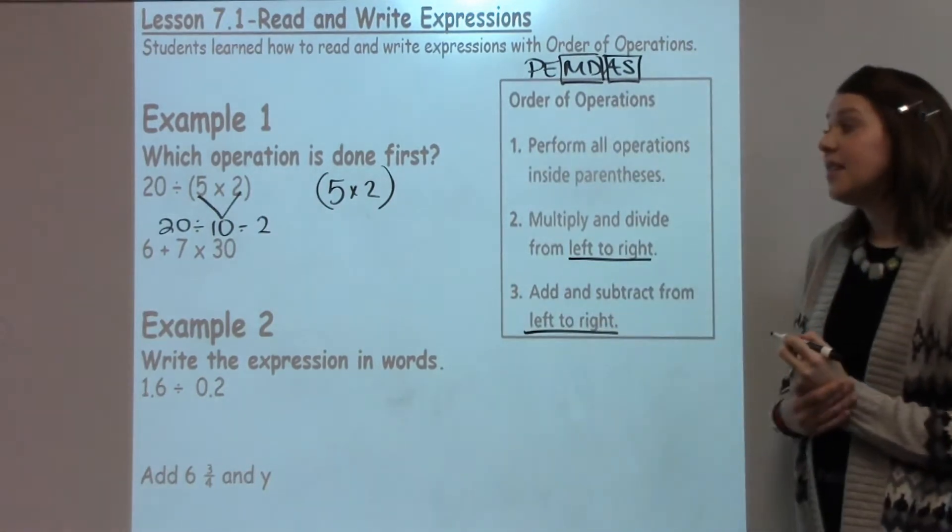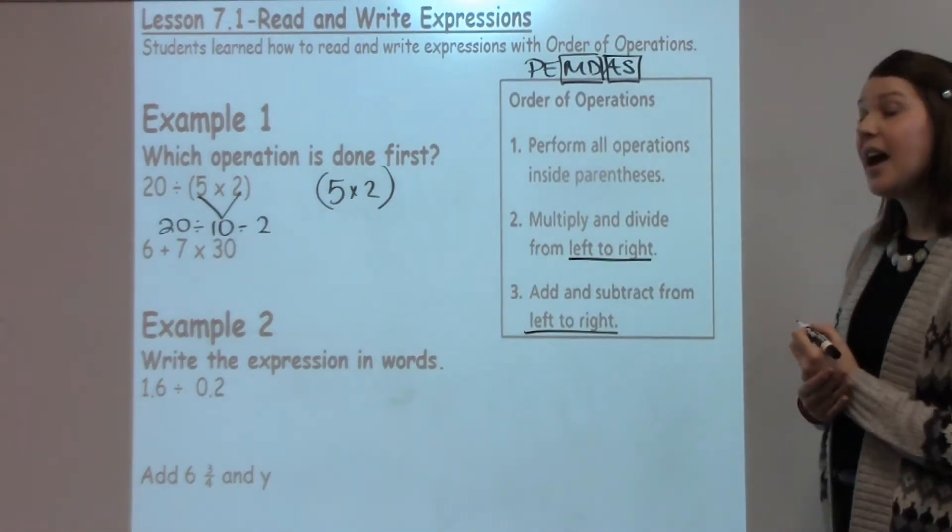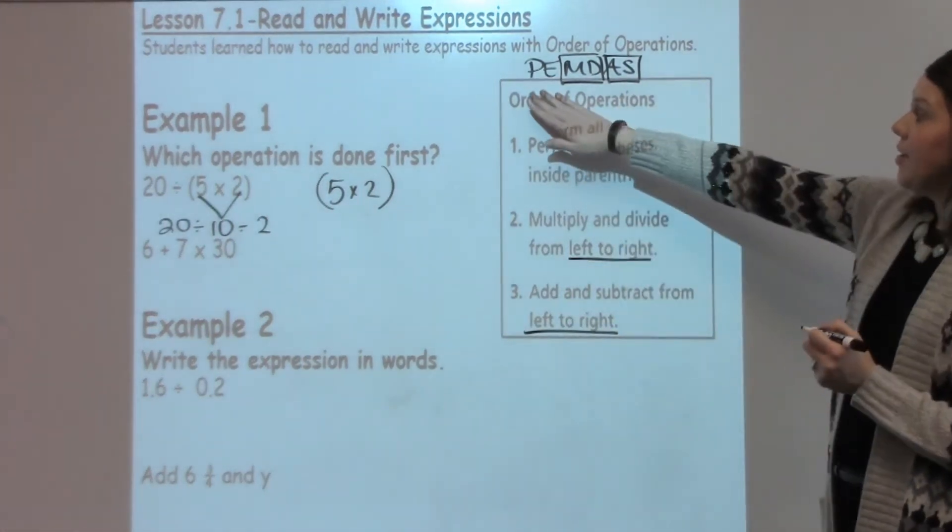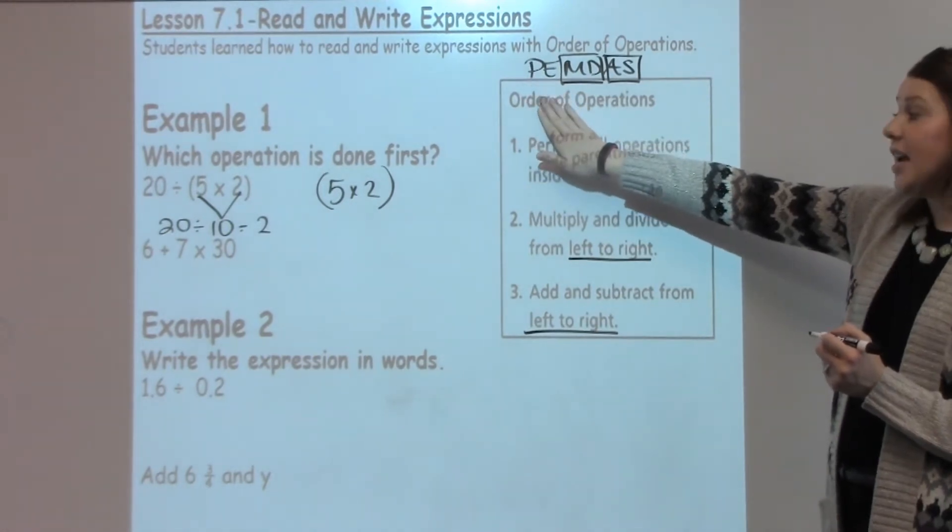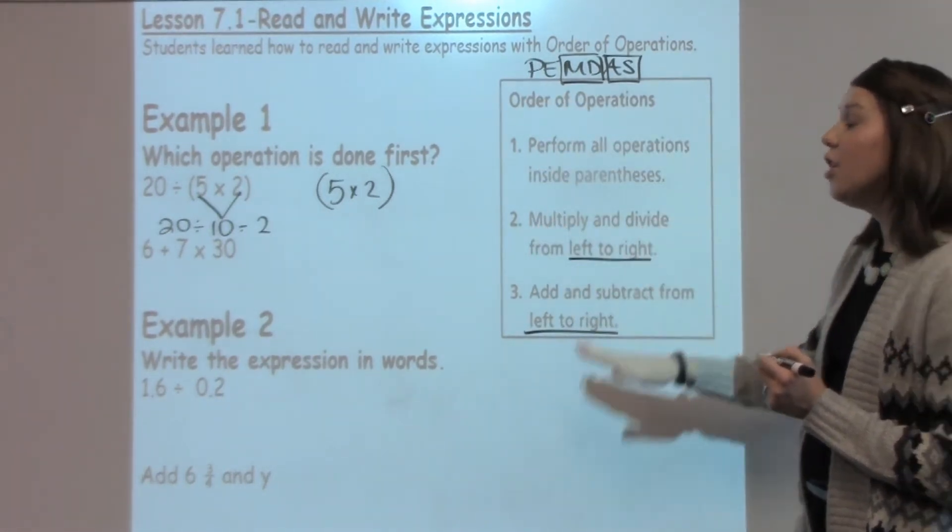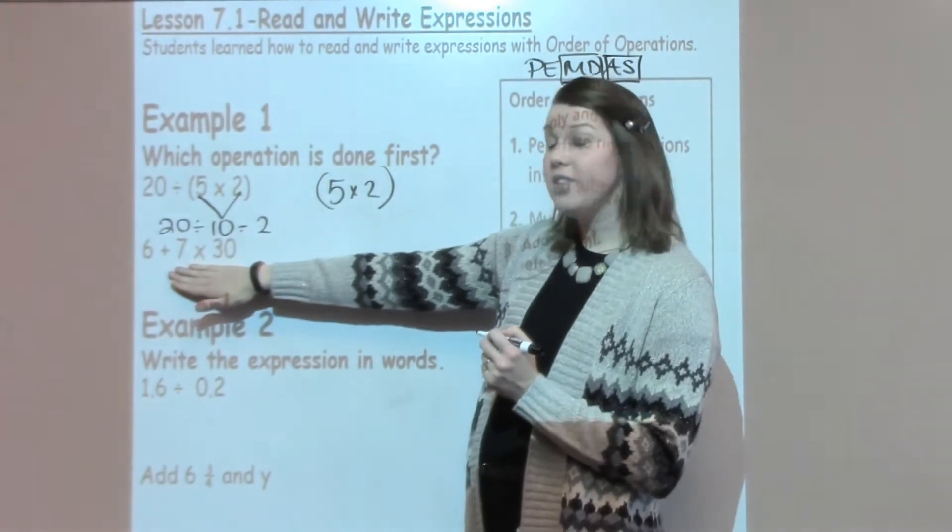Now looking at the next one, we have 6 plus 7 times 30. Do I have any parentheses? I don't. I don't have any exponents. Now go to multiplication and division. Do I have that in this problem? I do.